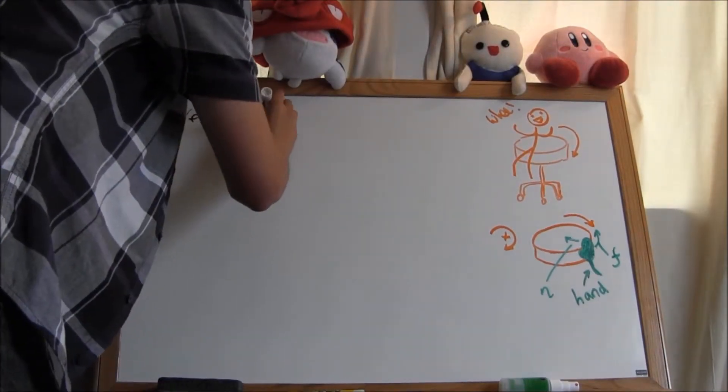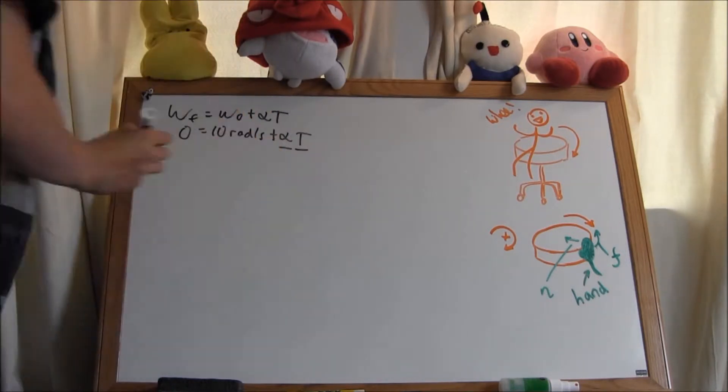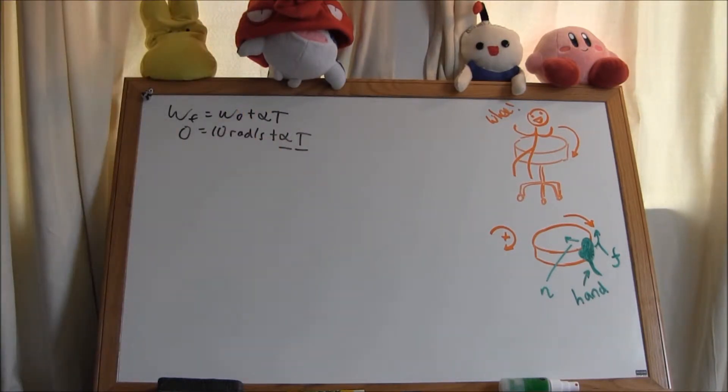First, since we know that the hand exerts a constant normal force, the deceleration of the chair will also be constant. This allows us to use the rotational kinematics equation of the final angular velocity equals the initial angular velocity plus the angular acceleration times time. The final angular velocity is 0 since the chair slows to a stop from 10 radians per second. Note that we have two unknowns: angular acceleration and time.